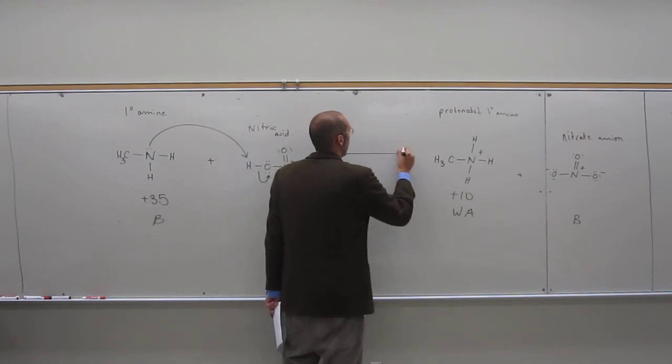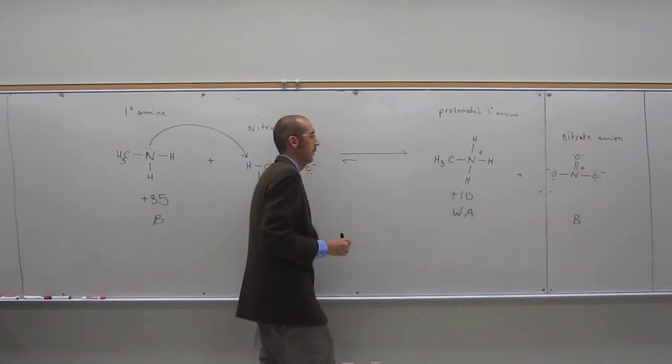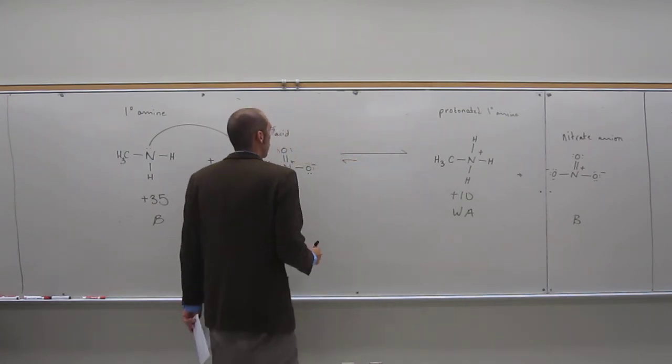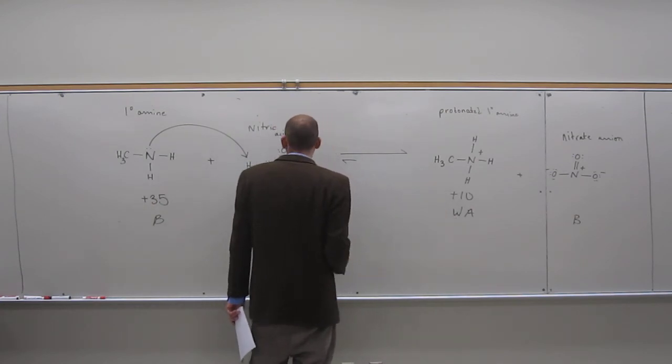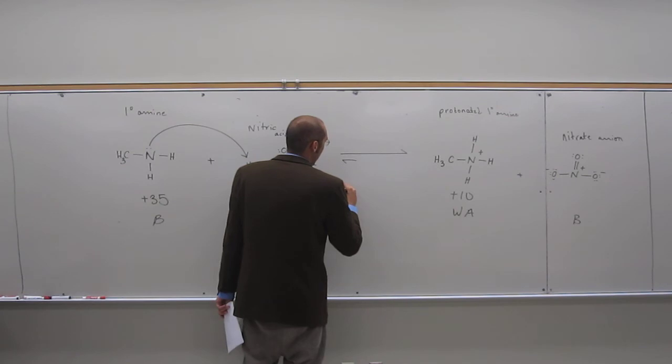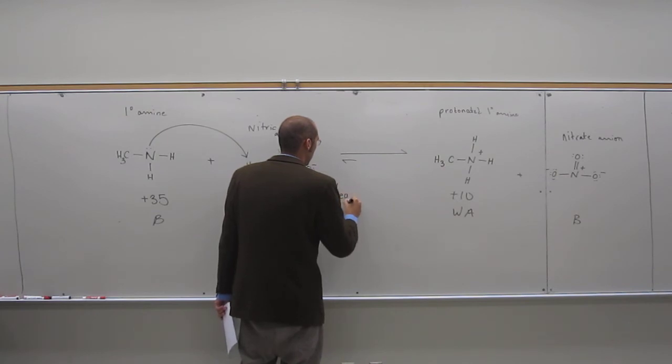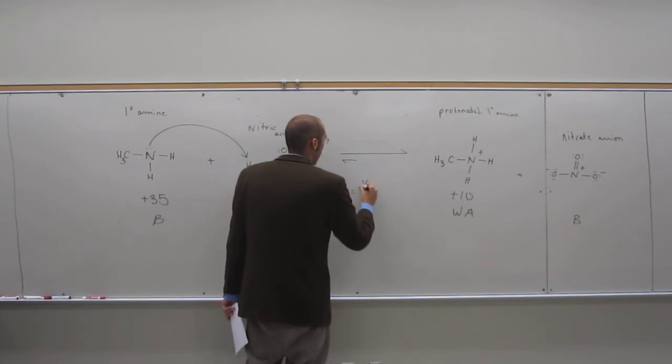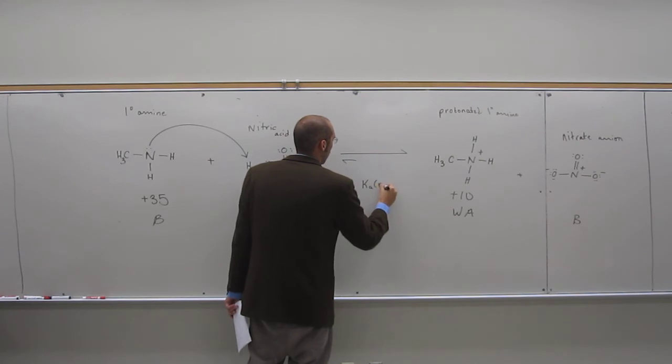Qualitatively? To the reactants. Why? Because the weak acid is over there. Right? So, how do we figure out the equilibrium constant mathematically? Help me out, guys. Reactant acid. Ka reactant acid over the Ka product acid.